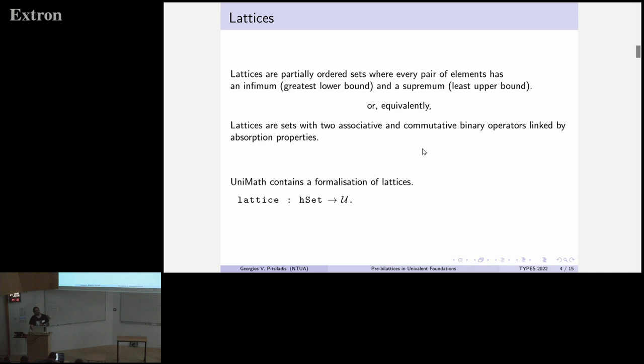Now, you are probably all familiar with lattices, but I have a slide for that as well. Lattices can be defined equivalently either as partially ordered sets where every pair of elements has an infimum and supremum, or equivalently as a set with two operators having some properties. There is already a formalization for that in Unimath. It uses the second definition, not important.